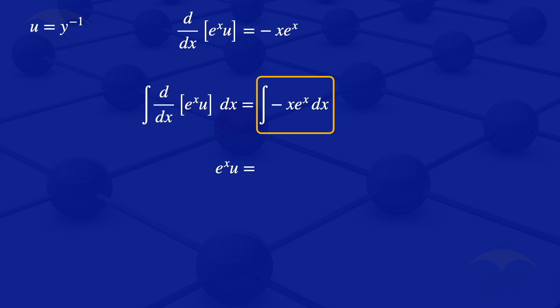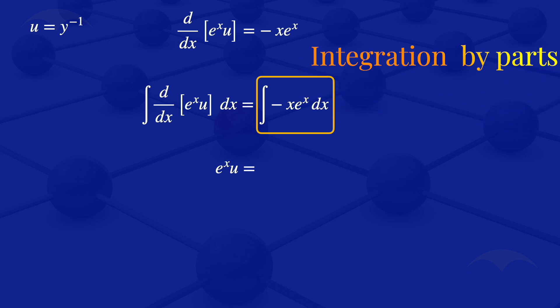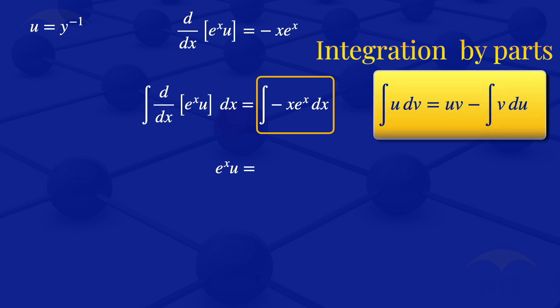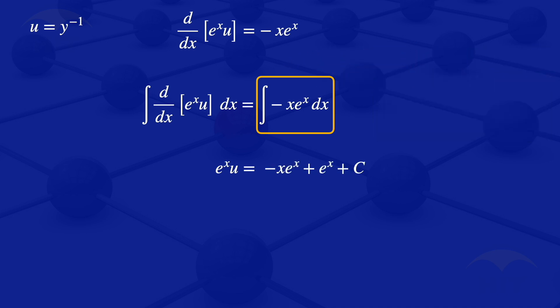On the right hand side we have the integral of minus X multiplied by exponent of X with respect to X. This is a product, so we use integration by parts: the integral of U dV is equals to UV minus the integral of V dU. Applying integration by parts, the result is minus X multiplied by exponent of X plus exponent of X plus C, where C is the constant of integration.